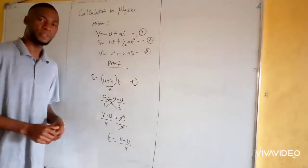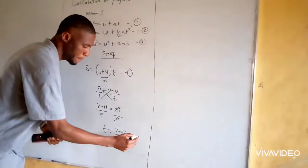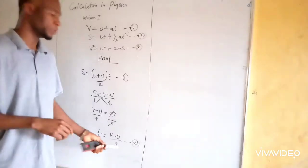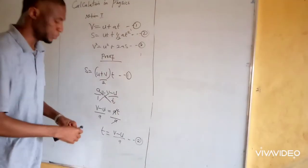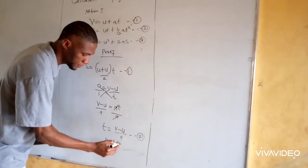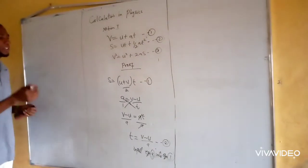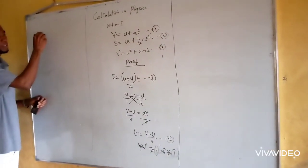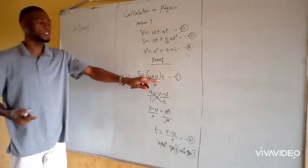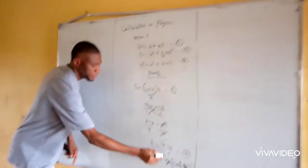So this is our equation two. We can now input equation two into equation one. In place of t in equation one, we are going to substitute t with v minus u over a.